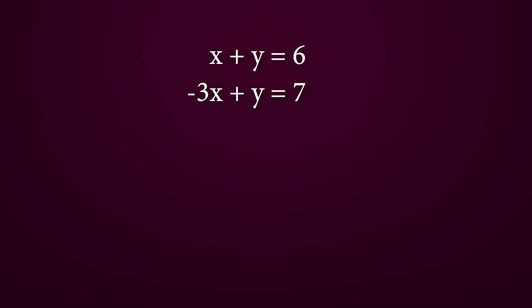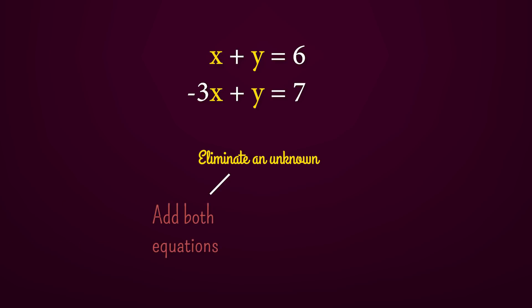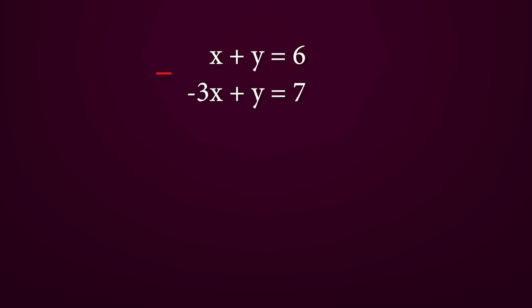In this video I'm going to show you how to solve simultaneous equations using the elimination method. When using the elimination method, the first step is to try to eliminate one of the two unknowns. To do this we are allowed to either add both equations or subtract them to make one of the variable terms zero.